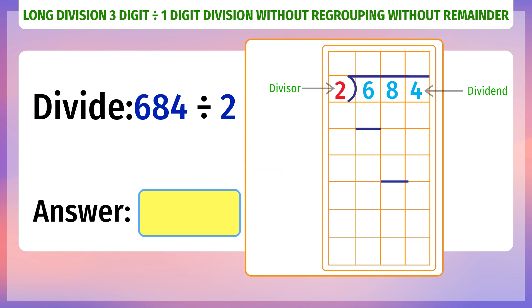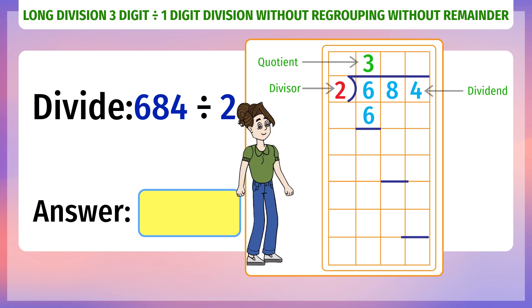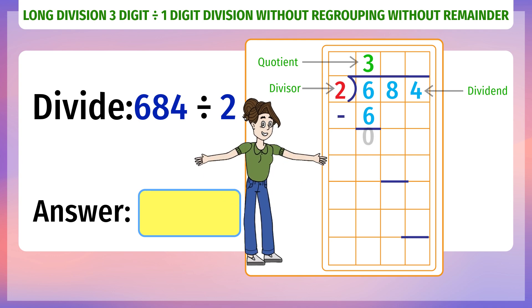Let's start. 684 divided by 2. First digit of dividend, 6. We will divide by divisor 2. 6 divided by 2 is 3. Write 3 in quotient space. Write 3 into 2, 6 below 6 of divisor. Subtract 6 minus 6 to get 0.